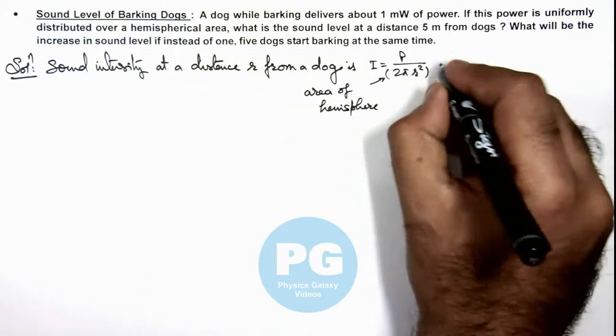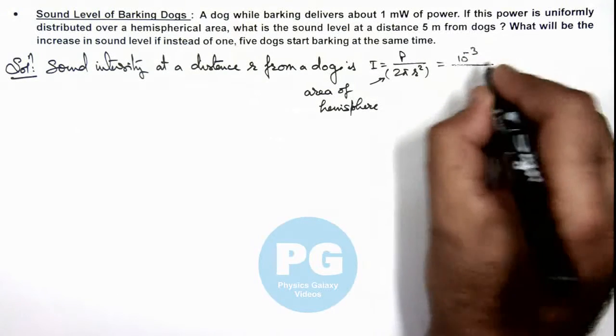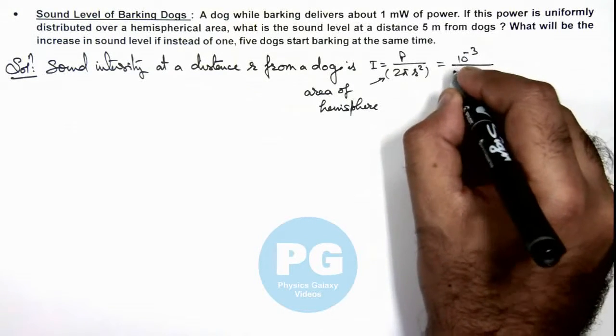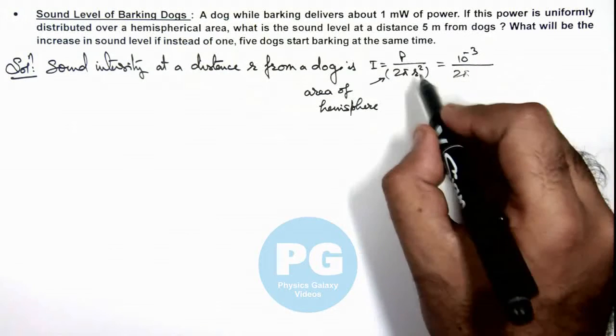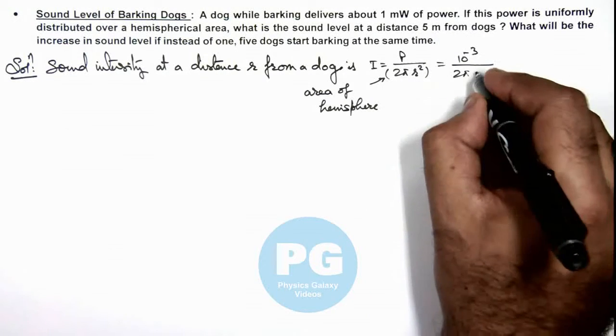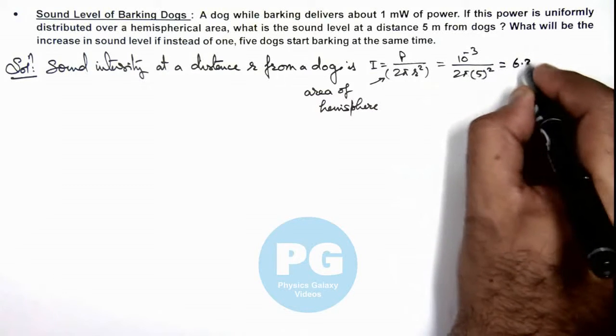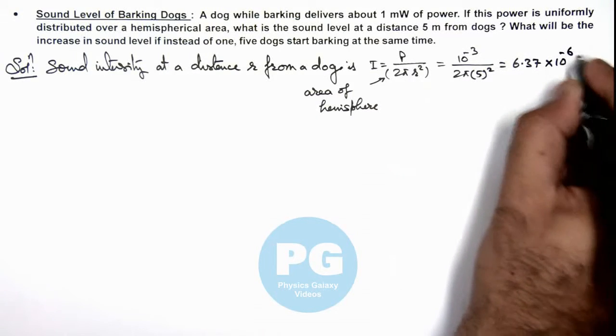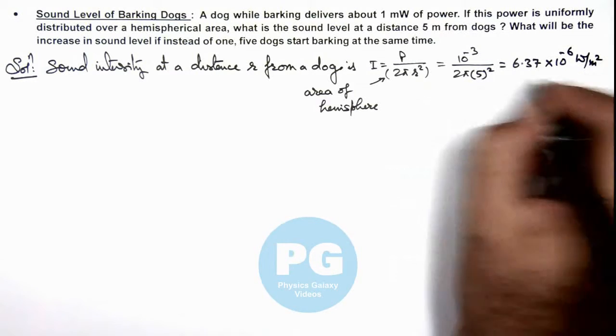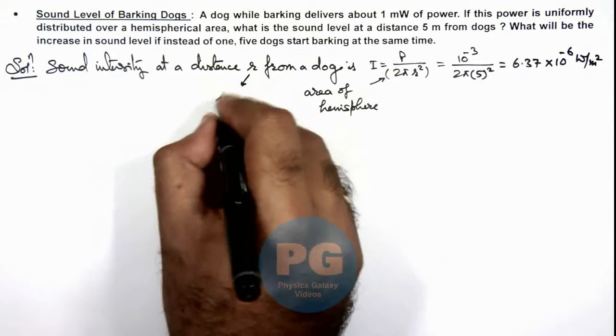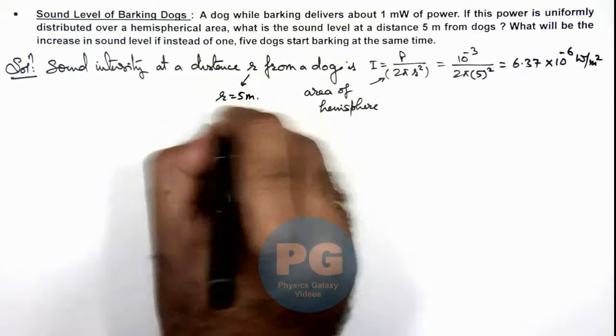So this will be 10^-3 divided by 2π multiplied by, at a distance r if we take as 5, so this is 5 squared. The value we are getting is 6.37 × 10^-6 watts per meter squared. Here we are taking r to be equal to 5 meters which is given in the problem.